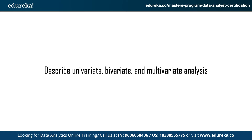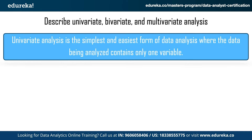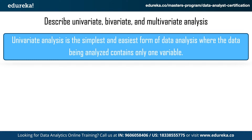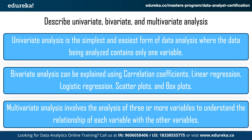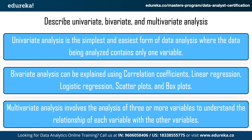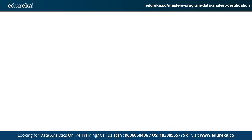The next question is: describe univariate, bivariate, and multivariate analysis. Univariate analysis is the simplest form of data analysis where the data being analyzed contains only one variable. Bivariate analysis means you are comparing two variables — this can be explained using correlation coefficients, linear regression, logistic regression, scatter plots, and box plots. Multivariate analysis involves the analysis of three or more variables to understand the relationship of each variable with other variables.